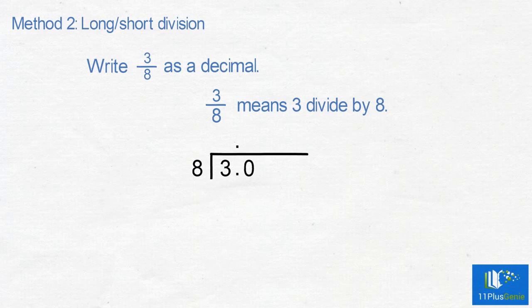Eights into 30 is 3 with a remainder of 6. Write down another 0 and carry the 6 over. Eights into 60 is 7 with a remainder of 4. Carry the 4 over.